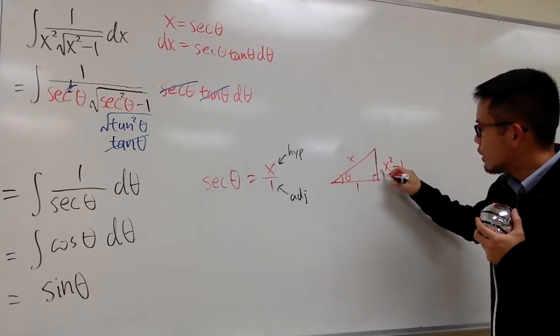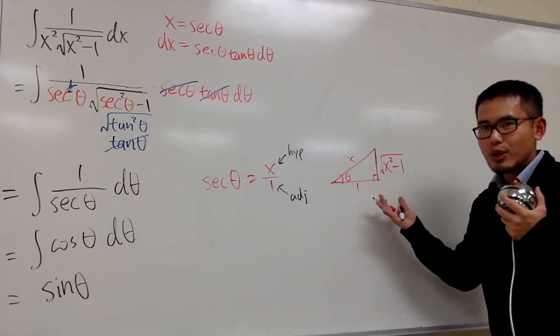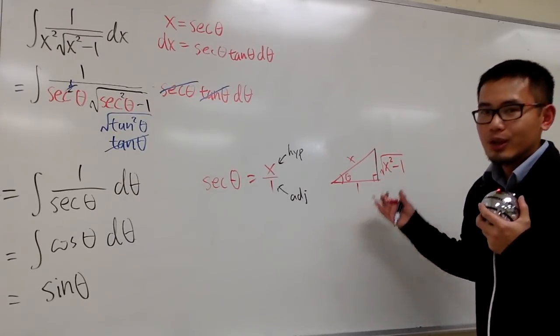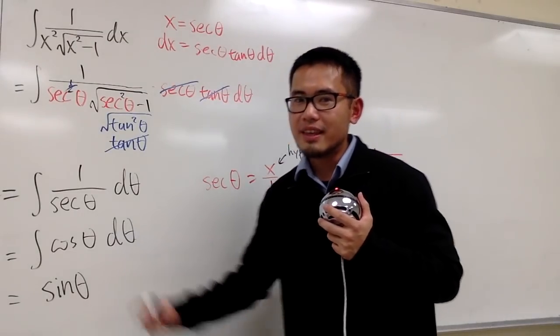And then, of course, we still have to square root this. So this is a triangle we can look at, and use this triangle to figure out what's sine theta.